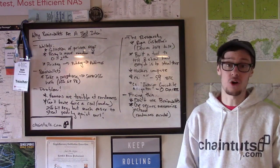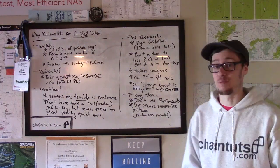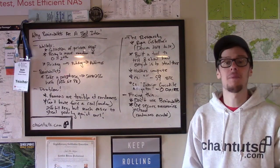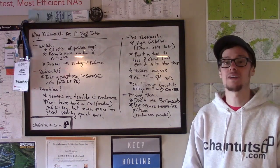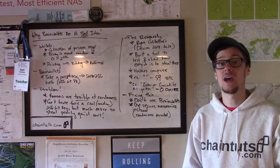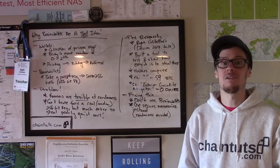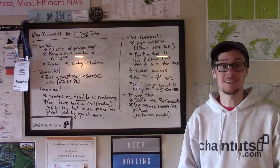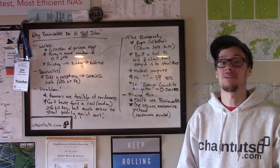So how do we solve the problem of brain wallets being insecure? The solution is simple: don't use them. They're fundamentally insecure. No matter how smart you think you are at coming up with a secure passphrase, chances are pretty good that somebody with a decent amount of computing power and time can and will steal your Bitcoin. You can think of the Bitcoin blockchain as a publicly available password database dump, with a juicy reward of money if somebody is able to crack the wallet. So don't use brain wallets.